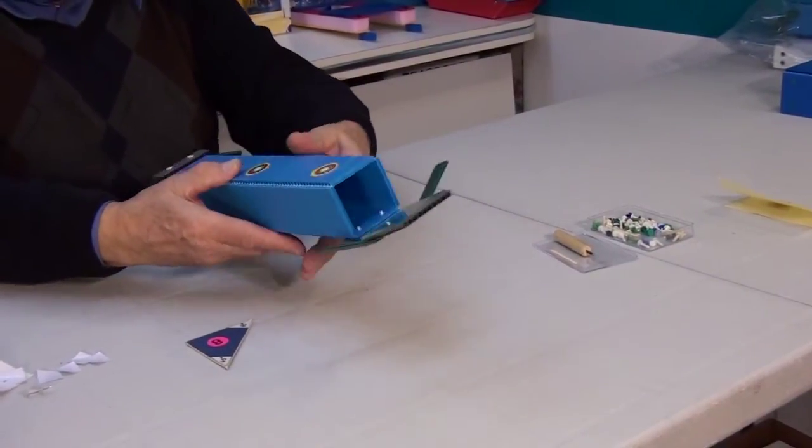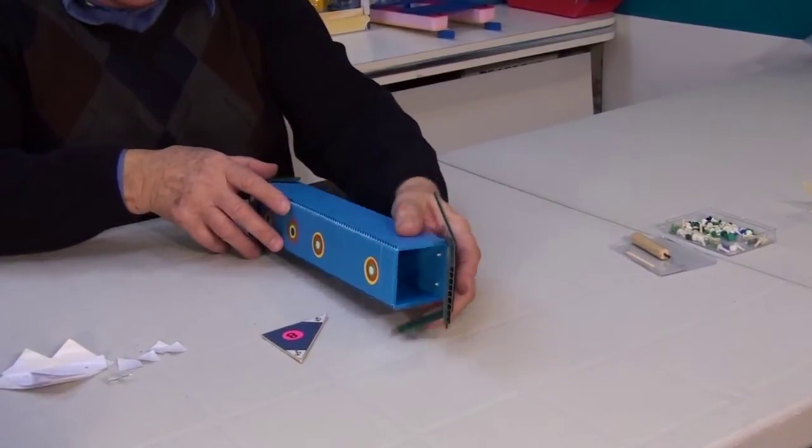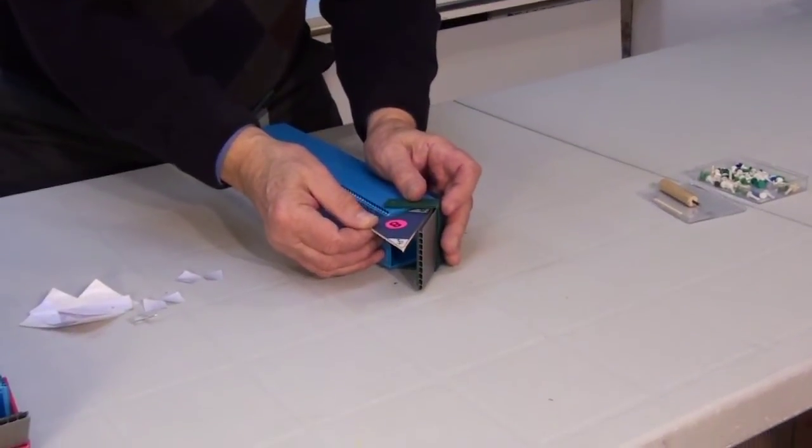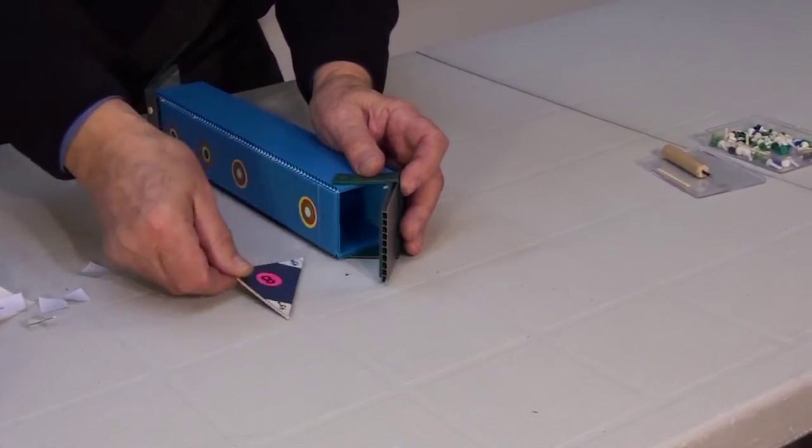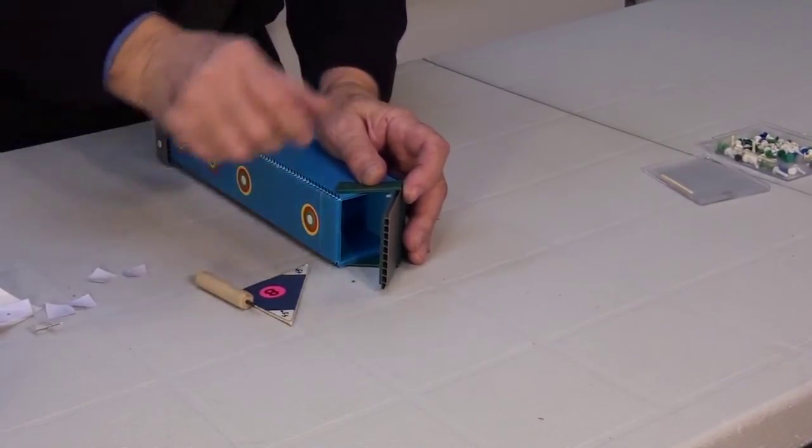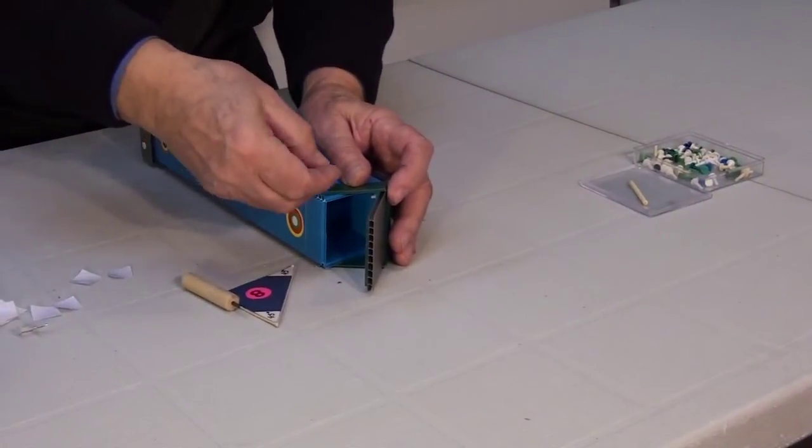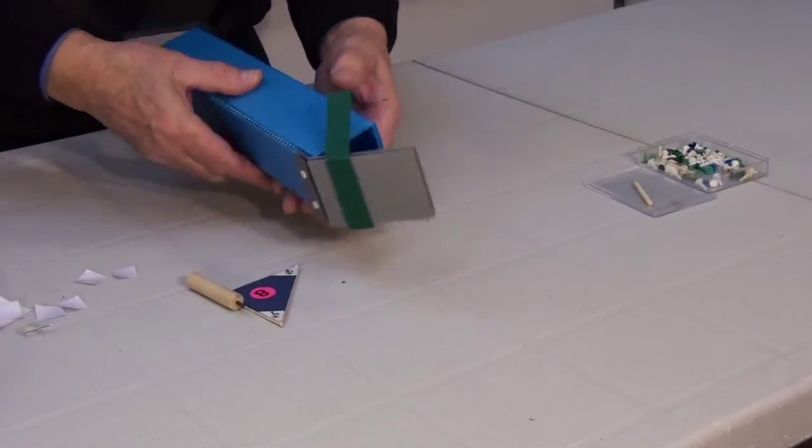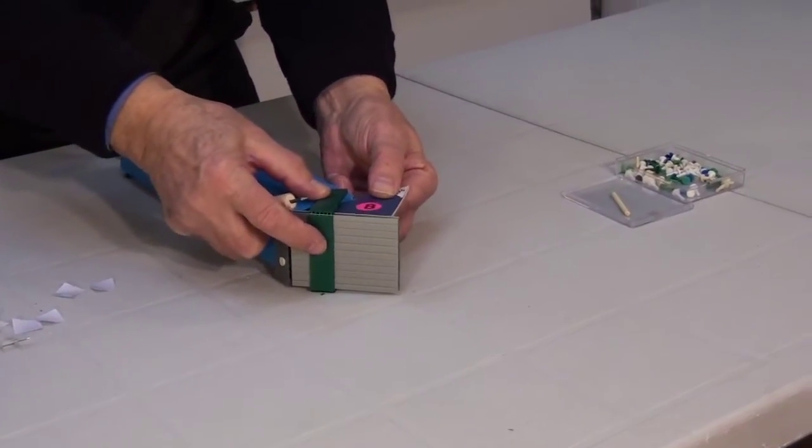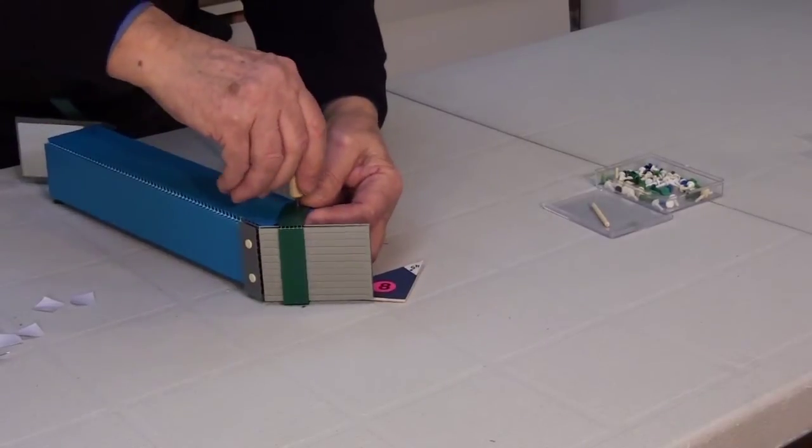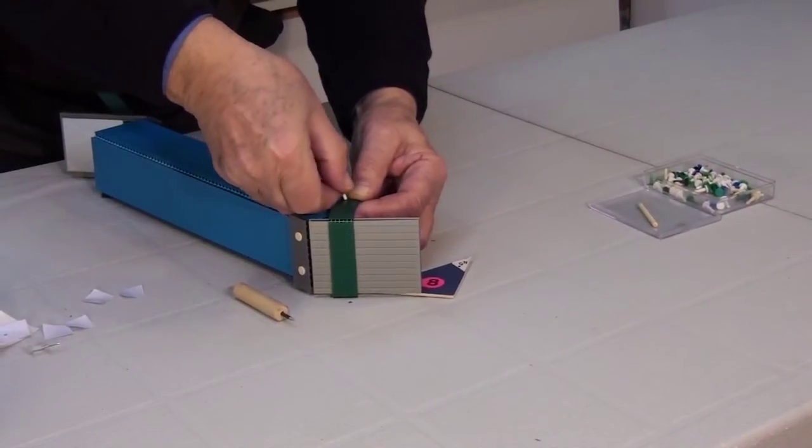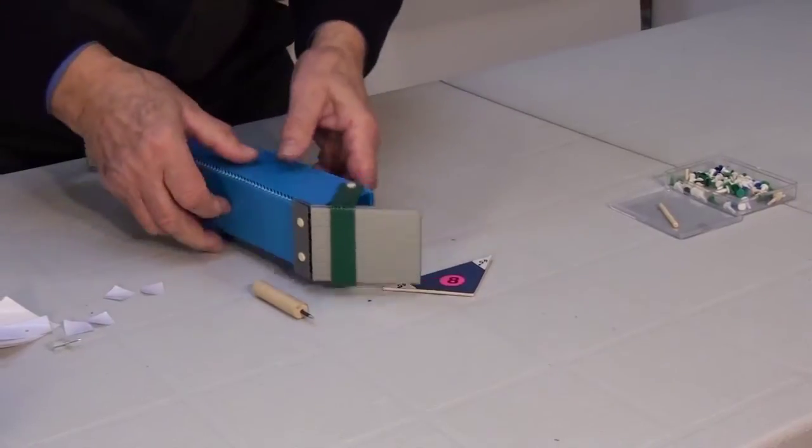Now it is time to secure the angle with the help of our former and two clips. Place the former like so. Make a hole using the pre-drilled hole on the strap as your guide. Insert one clip. Do the same on this side. This side is now ready.